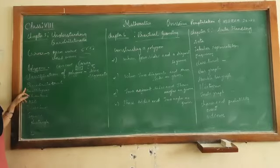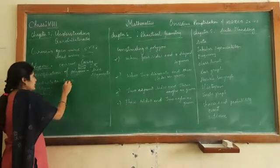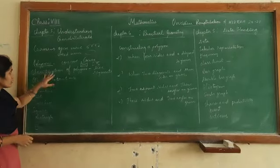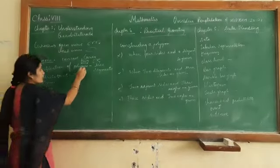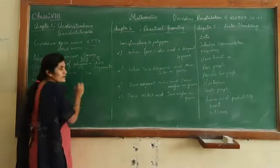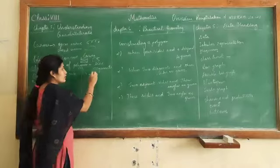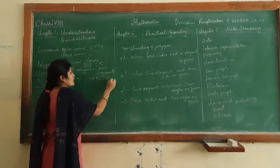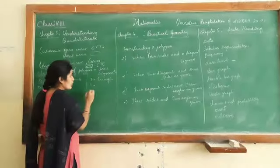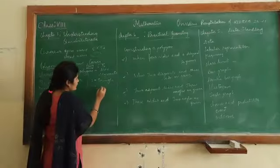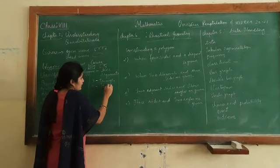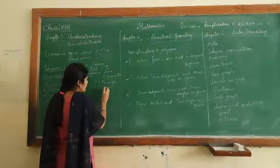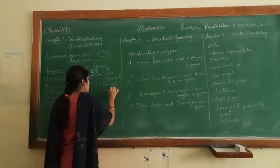Types of quadrilaterals: if it is a three-sided polygon you call it a triangle. If it is four-sided you call it a square, rectangle, or quadrilateral.